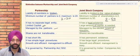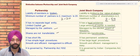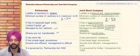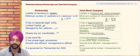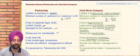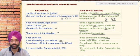Shares are not transferable in case of a partnership firm, but are transferable in case of a joint stock company. A partnership firm has a short life, whereas a joint stock company has permanent existence — because responsibilities and duties are transferred from one person to another through the board of directors. A partnership firm follows a simple legal procedure, whereas a joint stock company has a very complex structure of legal procedures.